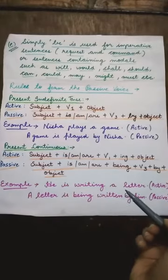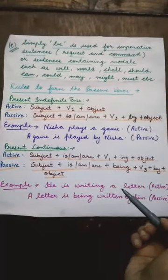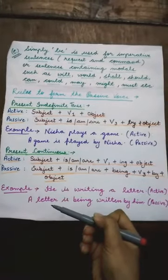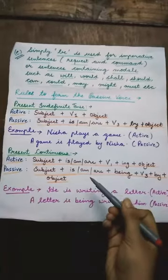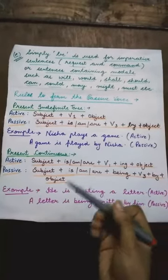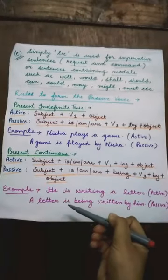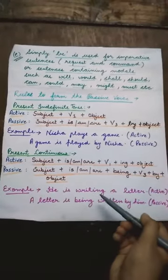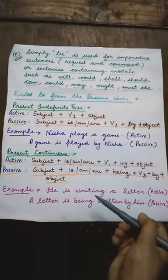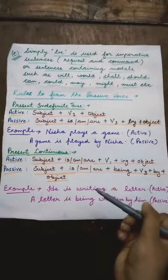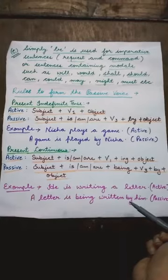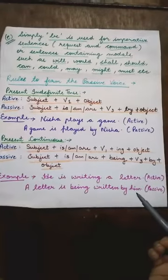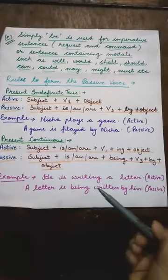Example: 'He is writing a letter.' Passive voice में formation: सबसे पहले object 'a letter' को subject की place पे लाएंगे. क्योंकि subject 'a letter' singular है, इसलिए helping verb 'is' use होगी. After that, 'being' use करेंगे. Then verb की third form — write की third form होती है 'written'. Then we write 'by', and at last He pronoun changes into him. So the sentence will be: 'A letter is being written by him.'